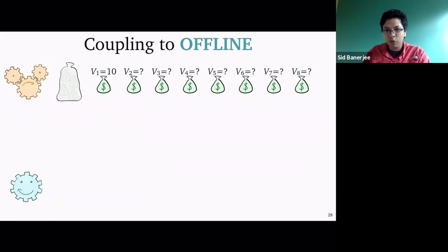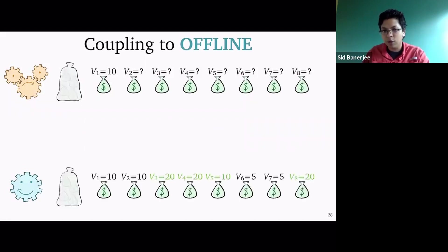Let me walk you through this example to show how we do this coupling. We have the online system where we see the first value — we see 8 values total and have a capacity of 4 and need to decide what to do. Here's the offline system: it also has capacity 4 and gets 8 values, but it knows exactly who's showing up in the future. I define the quantity r_online(t) as how much value the online algorithm has gotten up to time t. Initially at time 0, it has zero value.